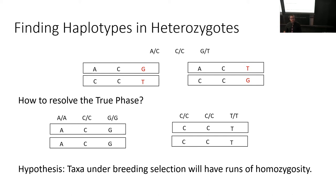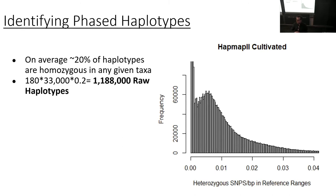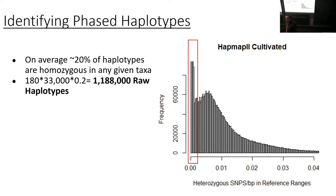I went to test that hypothesis, and this is what I found. This is a distribution of the number of heterozygous SNPs per genic range. There's a spike and then a hump off to the side. When I focus on the spike, those are haplotypes with near-zero heterozygous SNPs — it goes off the top of the chart. Those make up around 20% of all haplotypes from these taxa. Taking that 20% times about 180 gives over a million raw haplotypes that can be put into the database.